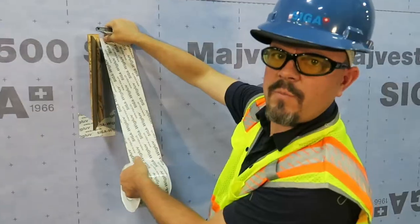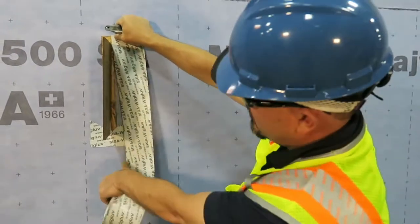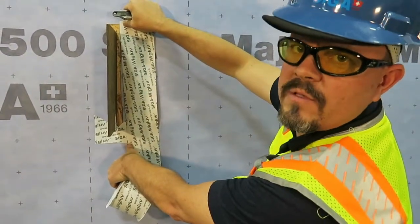The next step is to cut our next piece of tape. We want to be about an inch above the knife plate and come down to the bottom edge of our bottom piece of tape.